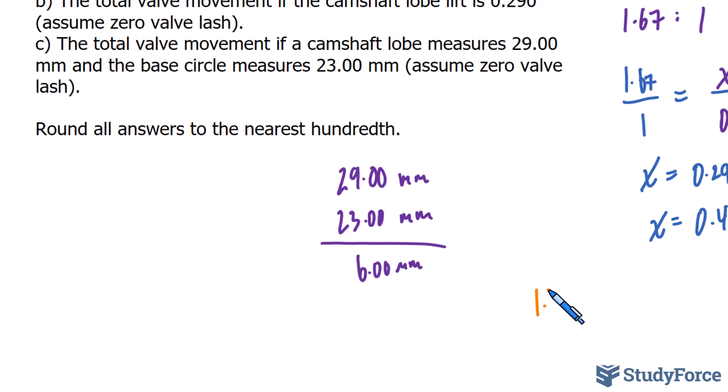So I'll take 1.67, multiply it to 6.00 millimeters, and that will give us our total valve movement.